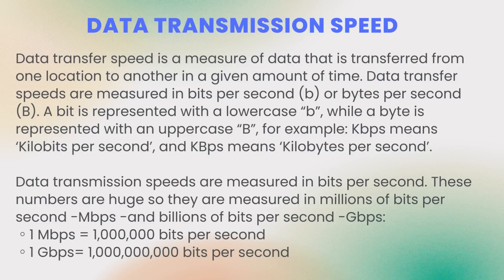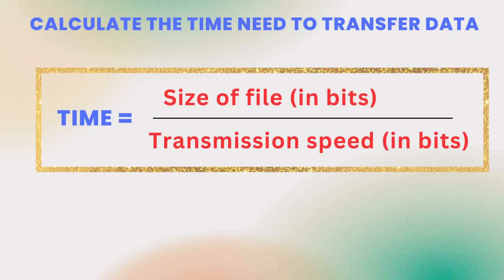Data transfer speed is a measure of how much data is transferred from one location to another in a given amount of time. Data transfers are measured in bits per second or bytes per second — lowercase 'b' for bits, uppercase 'B' for bytes. To calculate the time needed to transfer a file: time equals file size in bits divided by transmission speed in bits. When given values in different units, convert everything to bits before calculating, otherwise the answer will be wrong.